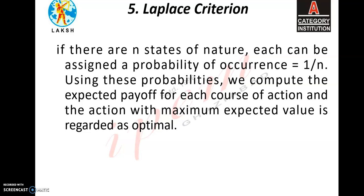The fifth method is Laplace criteria, under the environment of uncertainty. This criteria is based on the principle of equal likelihood or insufficient reason. Here, all the outcomes — that is events — should be considered equally likely. If there are N events (states of nature), each is assigned a probability of occurrence equal to 1 upon N. Using these probabilities we calculate the expected payoff for each course of action, and the action with the maximum expected value is regarded as the optimal decision.